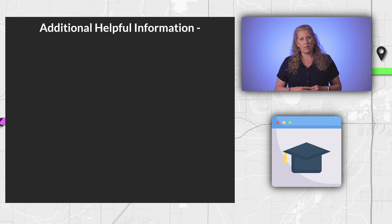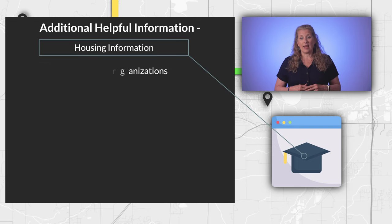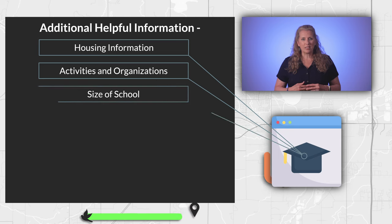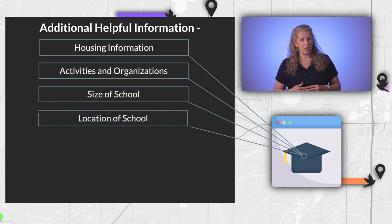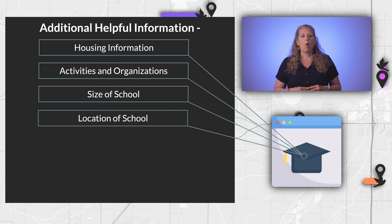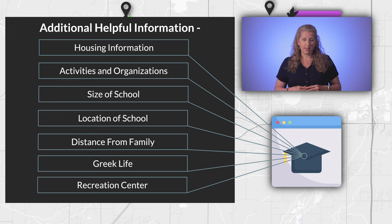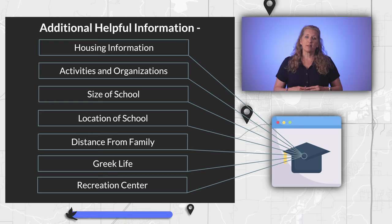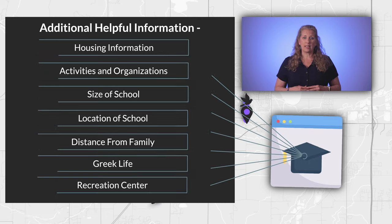These secondary topics may include housing arrangements, activities or organizations on campus, the size of the school and the town in which it is located, or any other specific information or areas that interest you and that might be important to your comfort level while attending that school.